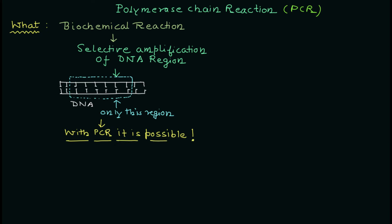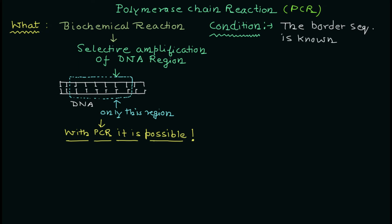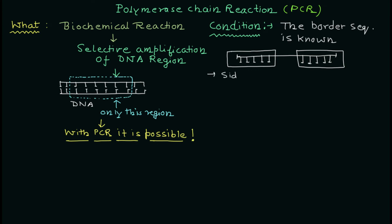Now there is one important condition for this: you can't just select any region and amplify it. The border sequence must be known. When you know the border sequence, only then can you amplify the region. There is no requirement to know the full sequence — you just need to know about 5 to 15 nucleotides of side 1 and side 2. If the sequence is known, you can design the primers, also known as adapter sequences, and using those, polymerase can amplify the region in between.